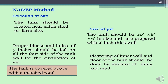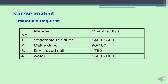The inner wall and floor of the tank should be plastered with a mixture of dung and mud. The tank is covered above with a thatch roof. The materials required for the NADEP method are: vegetable residues 1400 to 1500 kg, cattle dung 90 to 100 kg, dry sifted soil 1750 kg, and water 1500 to 2000 liters. These are the standard quantities.